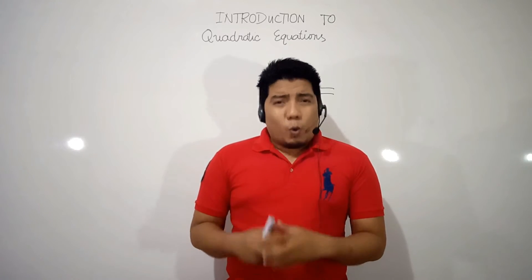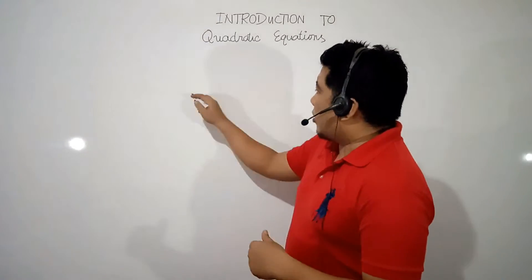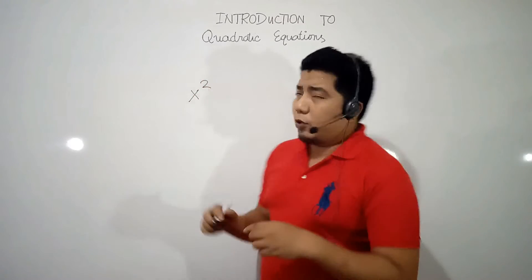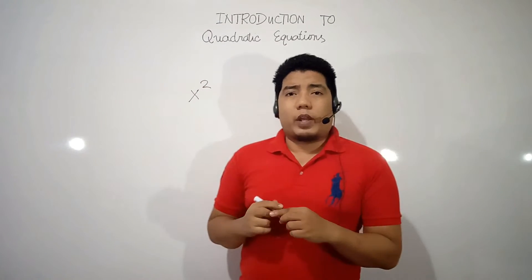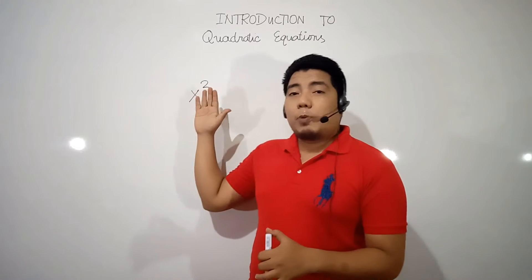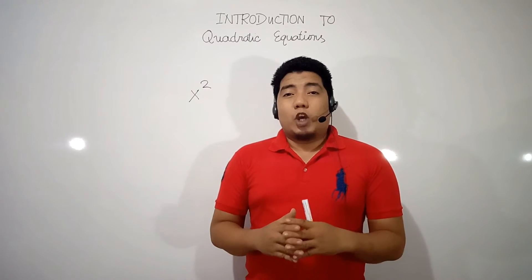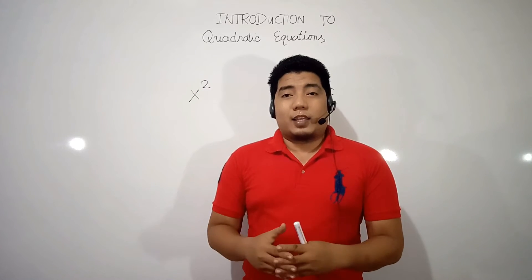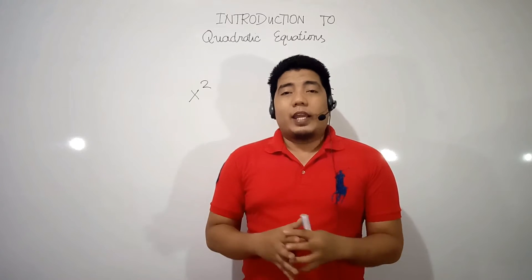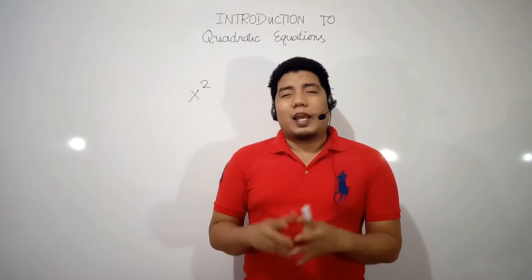What is meant by the second degree? We are talking about a variable with an exponent of 2 — it is read as x squared. So a variable with an exponent of 2 is considered to be an expression in the second degree. Combined with an equal sign, it will be considered to be a quadratic equation.